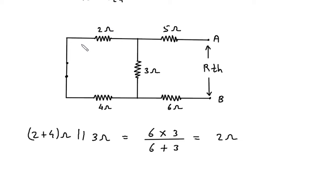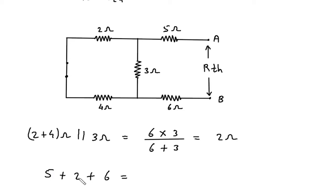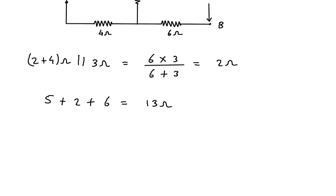Now we can replace this whole circuit — these 3 resistors — by 2 ohm. So this 2 ohm is in series with this 5 ohm, then plus this 6 ohm. So 5 plus 2 is 7, and 7 plus 6 is 13 ohm. Therefore Rth is equal to 13 ohm.